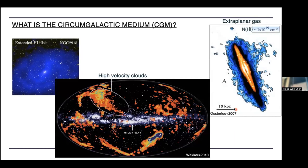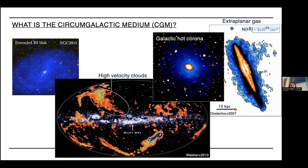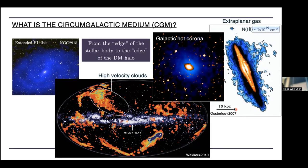At a CGM workshop in Aspen, somebody casually mentioned we should define the circumgalactic medium — and it ended up being a one-hour discussion. The way I think about it is: everything beyond the stellar disk. If you plot the surface density of stars compared with surface density of gas, whenever the gas surface density exceeds stars, I consider that the CGM territory. So why do we care about the circumgalactic medium?